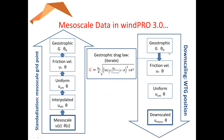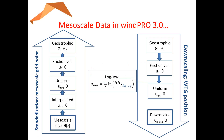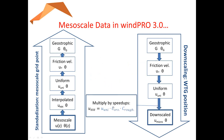Then we have the geostrophic wind speed, which we can apply in the actual downscaling part on the right side. We take the geostrophic wind speed and apply it in the geostrophic drag law. But this time, we know the geostrophic wind speed and we know the reference roughness at the wind turbine position, and we want the friction velocity. That's not an analytical solution, so it's done iteratively. Once we have the friction velocity, we can calculate the wind speed at uniform roughness and terrain, and apply the microscale speed-up factors for terrain and roughness variations. The result is the downscaled wind speed and direction.